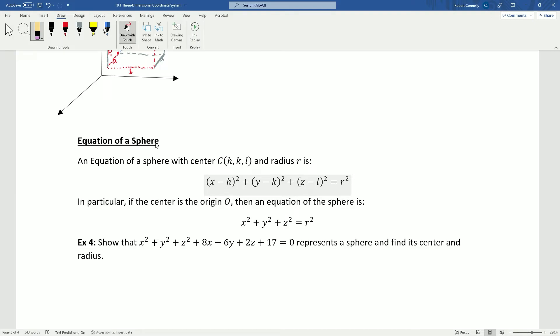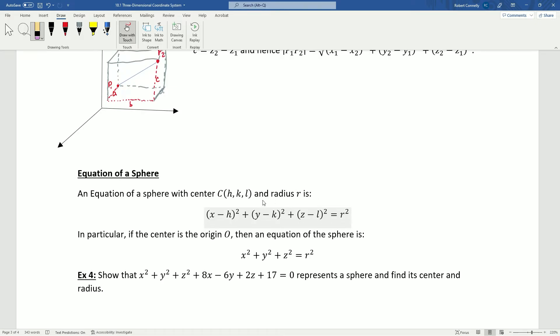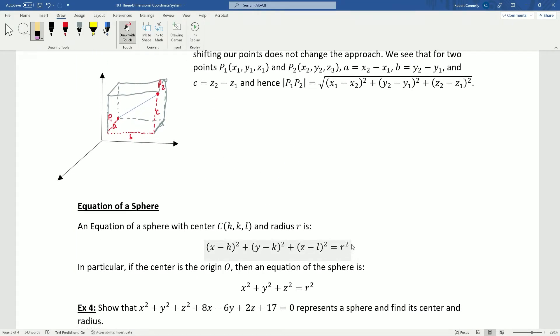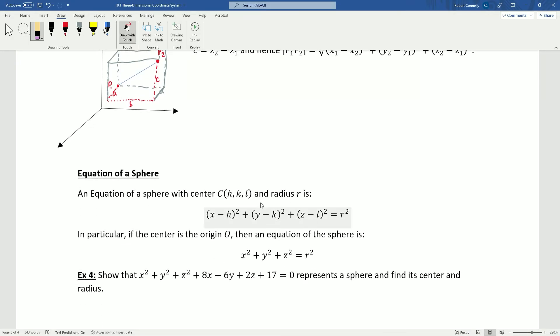We're going to talk about the equation of a sphere real quick. So, an equation of a sphere with center (h, k, l) and radius r is (x - h)² + (y - k)² + (z - l)² = r². Now, hopefully this makes sense because the definition of a sphere geometrically is the set of all points that are equidistant from a center. So, if we're applying the result of the distance formula here where r is the distance, then all we're saying here is that this is the set of all points x, y, and z that are a distance of r from the center h, k, and l. Now, if the center is at the origin, we get that x² + y² + z² = r².